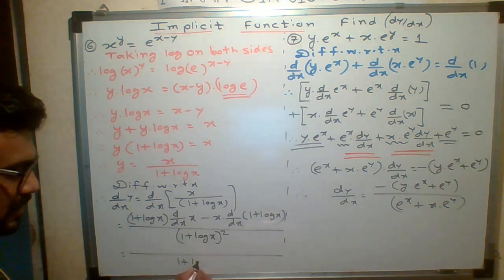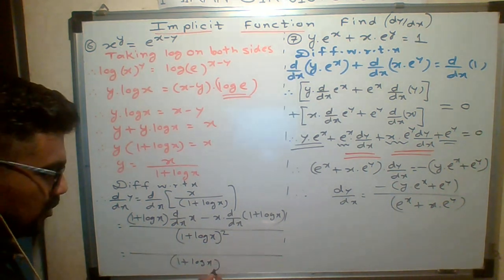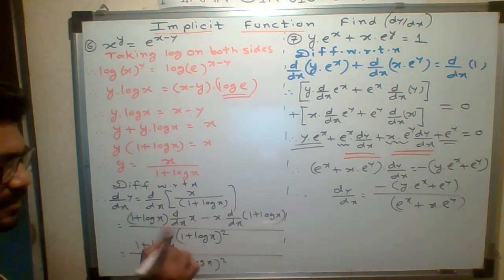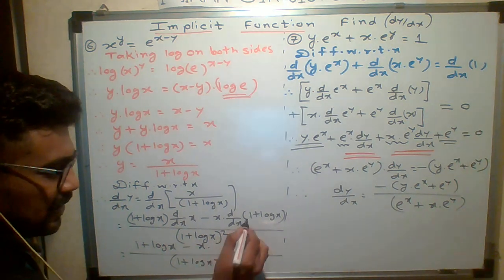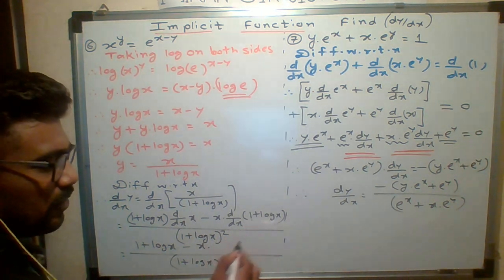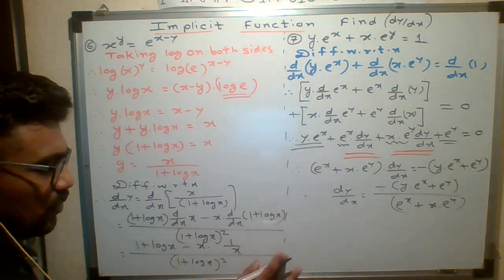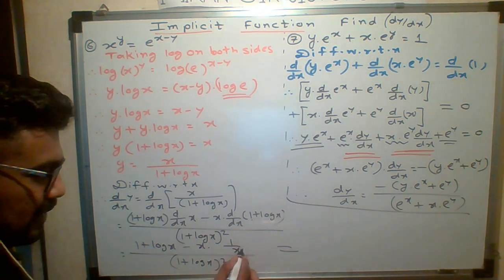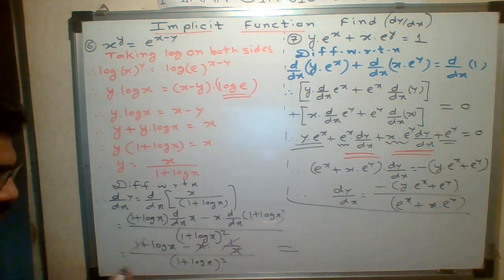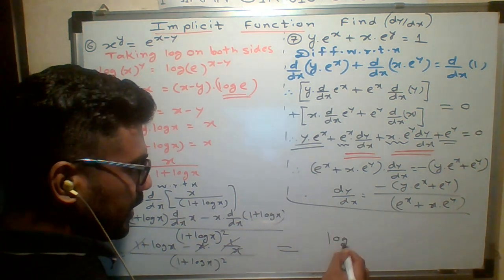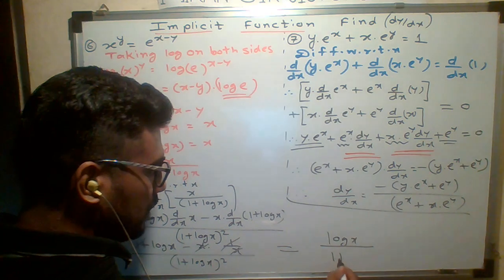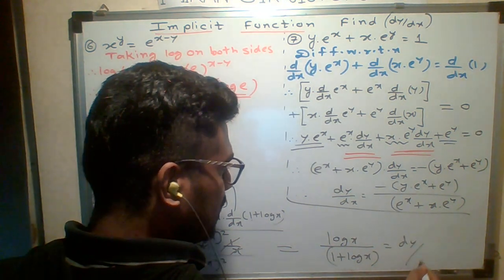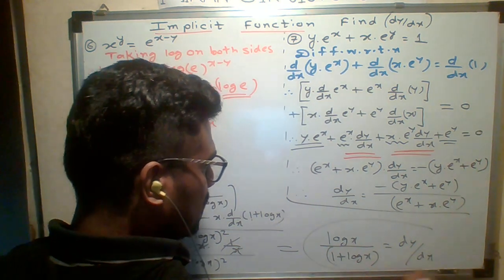The denominator is (1 + log x)² in the whole square. Here (1 + log x), derivative of x with respect to x is 1, minus x. Derivative of 1 is 0, derivative of log x is 1/x. So what is the final answer? 1 + log x, this x and x will cancel, leaving 1. Plus 1 minus 1 cancel. So what remains? Log x upon (1 + log x)² the whole square. This is dy/dx, this is my final answer.